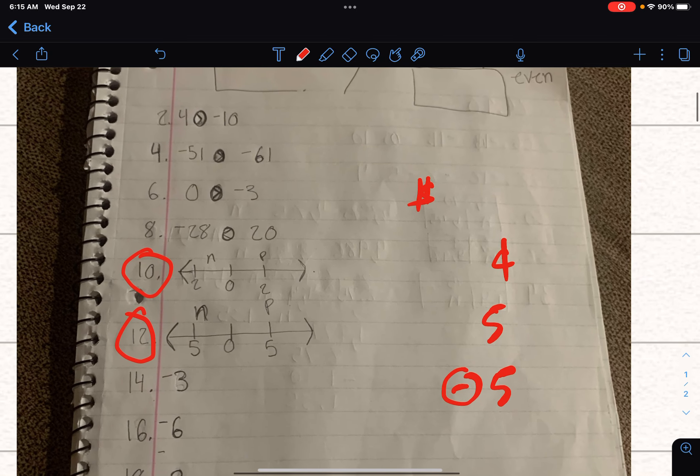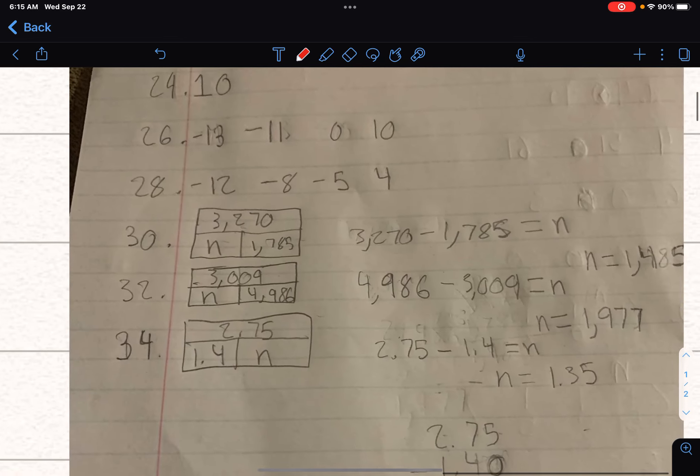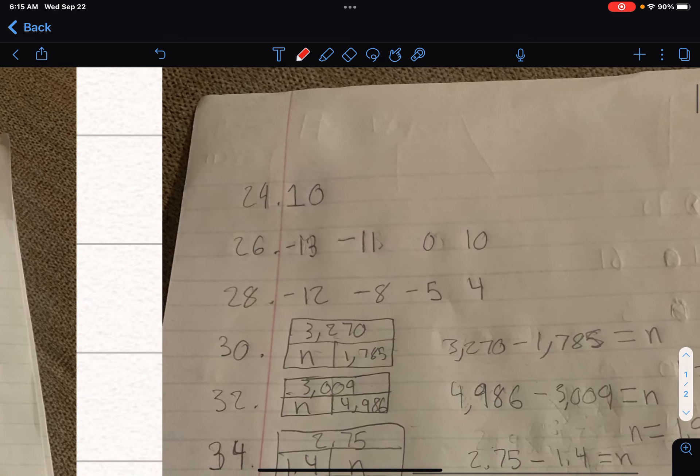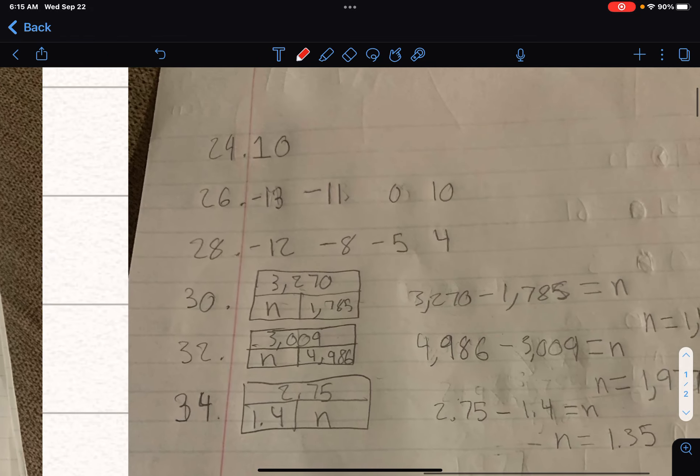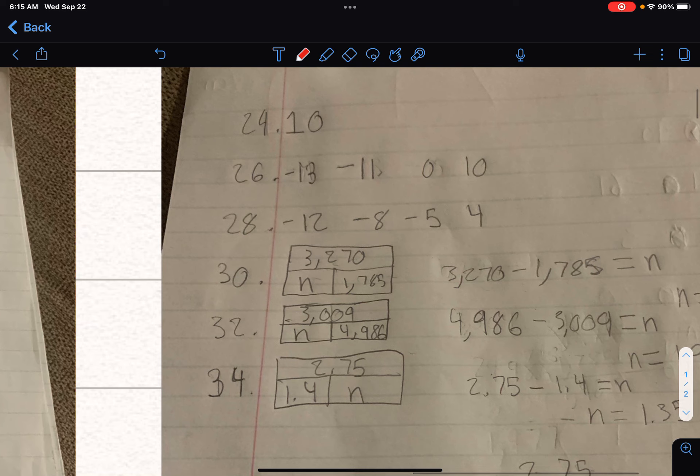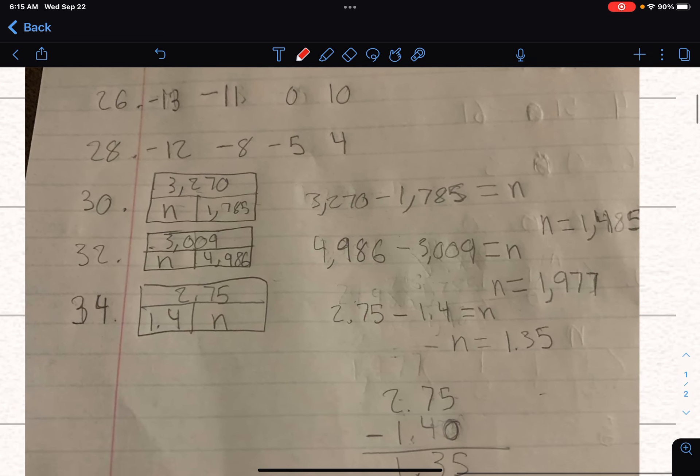So take a look at number 10 and number 12 and just double check those. And then everything else from all the way up until 30, everything looks great. Looks like you did an amazing job. And I think all these are correct as well.